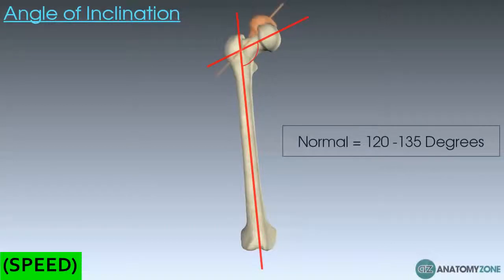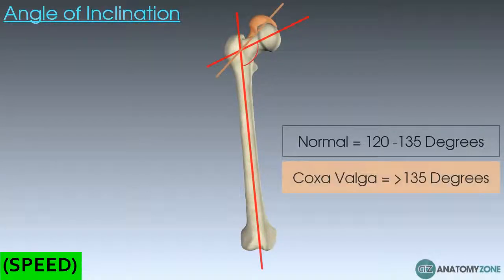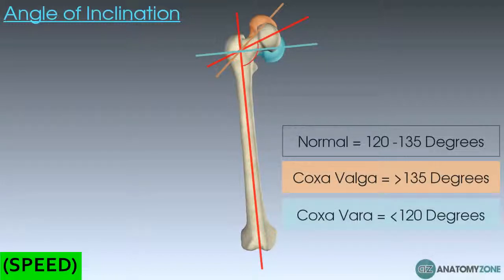If this angle increases above 135 degrees, it's referred to as coxa valga. If this angle decreases below 120 degrees, it's referred to as coxa vara.